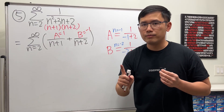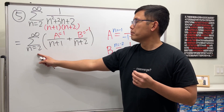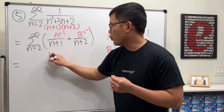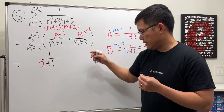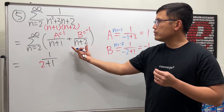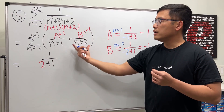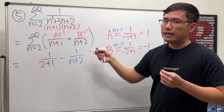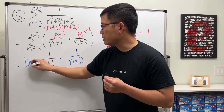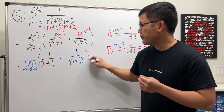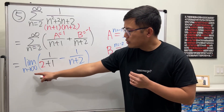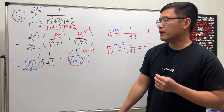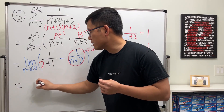Start with the n-value, plug into the first term one time to get one over two plus one, then subtract this part just one time. Take the limit as n goes to infinity — this goes to zero because we get one over infinity. The answer is one over three.